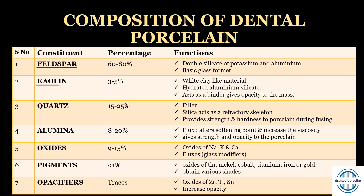Second is kaolin, present at 3 to 5%. It is the basic binder in dental porcelain — a white clay-like material, hydrated aluminium silicate, which also gives opacity to the mass. Third is quartz, a form of silica and the filler in dental porcelain, present at 15 to 25%. It acts as a refractory skeleton, providing strength and hardness to the porcelain during fusing.